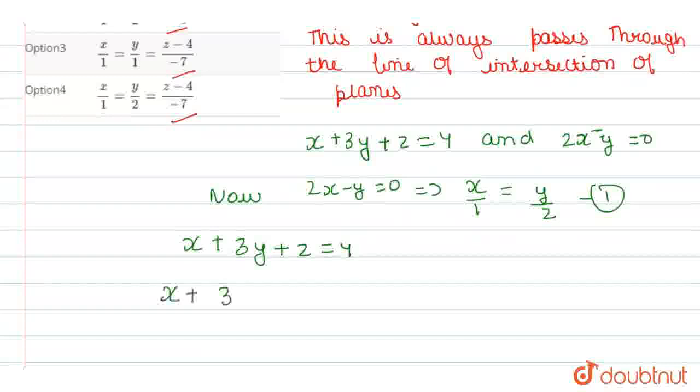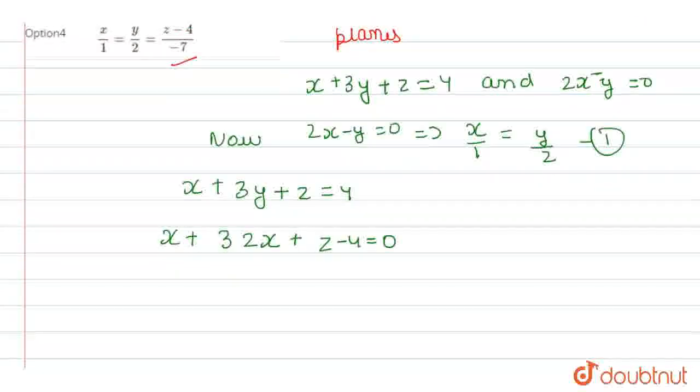We will get x plus 3 times 2x plus z minus 4 equal to 0. From this we are getting 7x plus z minus 4 equal to 0.